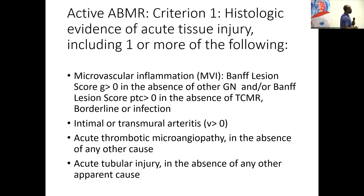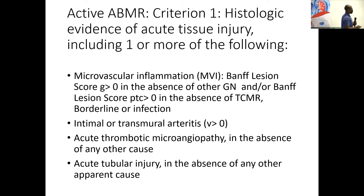The features used to determine acute tissue injury are: microvascular inflammation, which is glomerulitis and peritubular capillitis — in a native biopsy we'd call this endocapillary hypercellularity, but in a graft biopsy it becomes glomerulitis, though you must exclude de novo or recurrent glomerulonephritis. Also intimal or transmural arteritis, referring to damage to the endothelium of large blood vessels. And less commonly considered: acute thrombotic microangiopathy and tubular injury in the absence of any other cause may also be diagnostic.